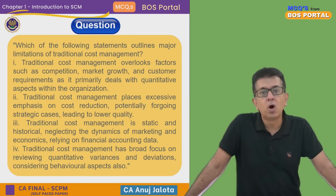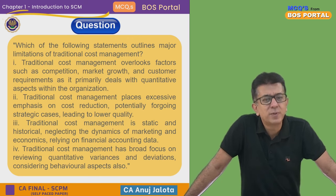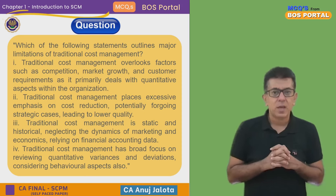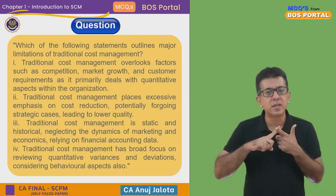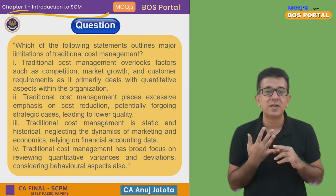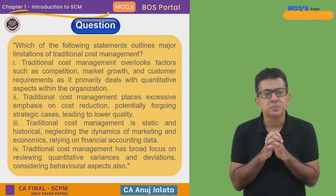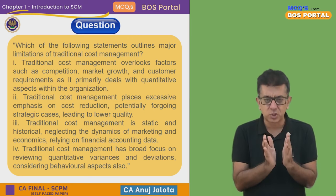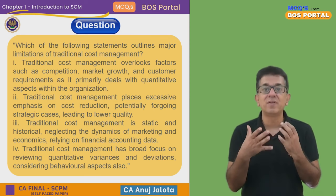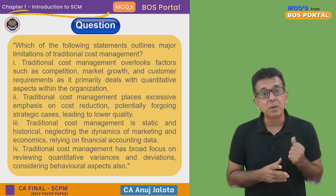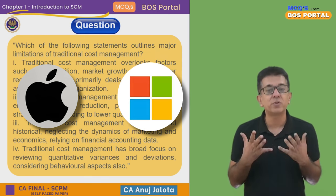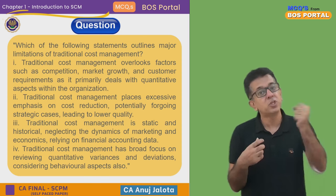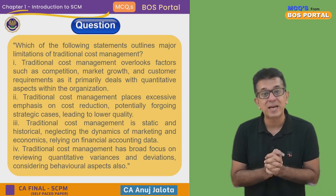Statement three: traditional cost management is static and historical, neglecting the dynamics of marketing and economics, and relying on financial accounting data. Again, absolutely true. Traditional cost management was about setting standards and budgets and checking if performance matched them. But businesses have changed so much — any company relying only on past financial data cannot cope with new developments. Who would have thought a company like Nvidia would become bigger than Apple and Microsoft? That's what AI has done to markets. Things are constantly changing, and traditional cost management never addresses this.